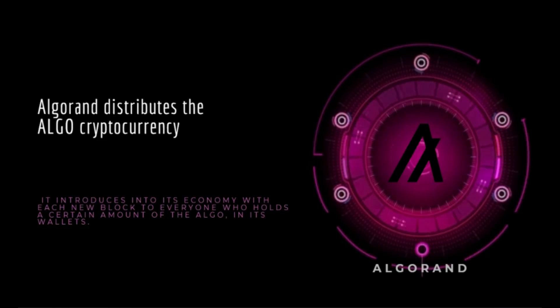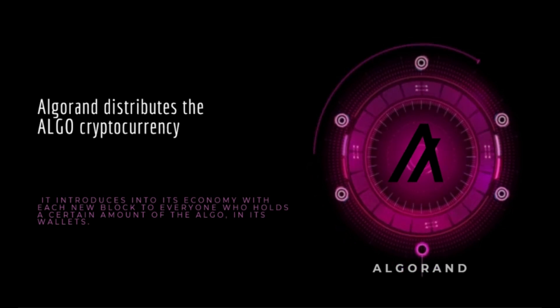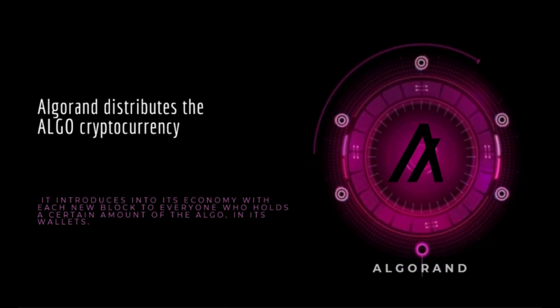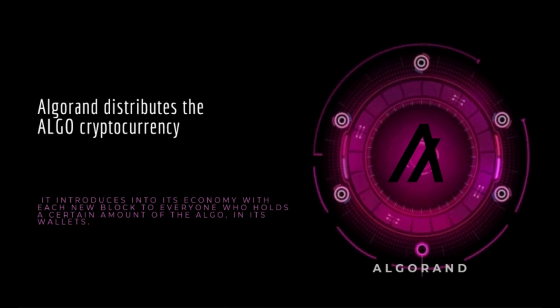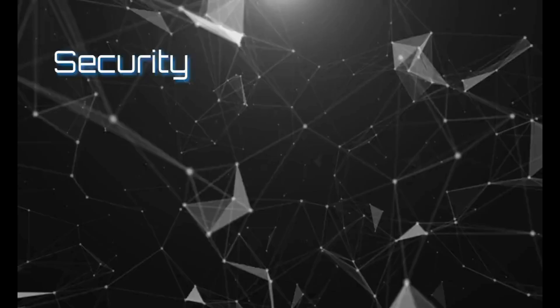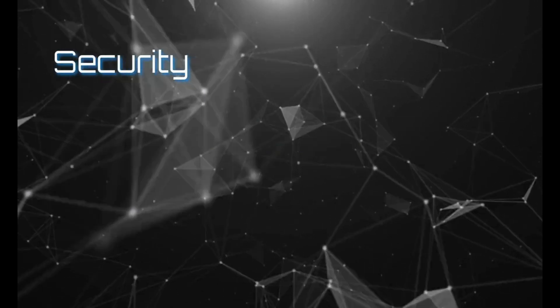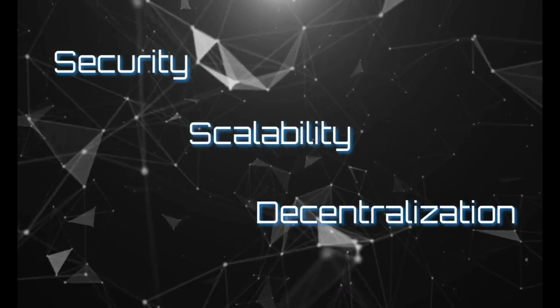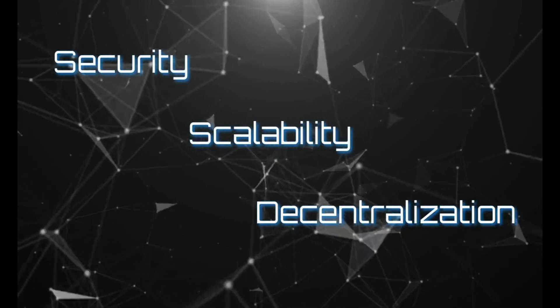Algorand distributes the ALGO cryptocurrency it introduces into its economy with each new block to everyone who holds a certain amount of ALGO in their wallets. Algorand aims to solve the three main challenges faced by blockchains today: security, scalability, and decentralization.